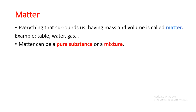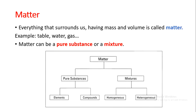Matter can be a pure substance or a mixture. So matter can be divided into two parts: pure substances and mixtures. A pure substance is made of only one substance. For example, oxygen gas. While a mixture is made up of two or more substances, just like salty water or water and oil.